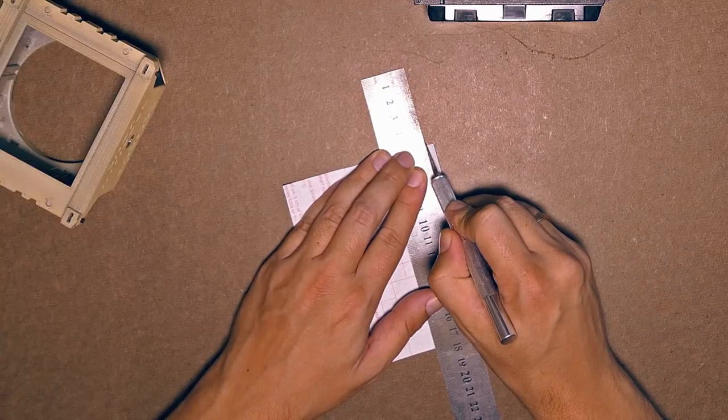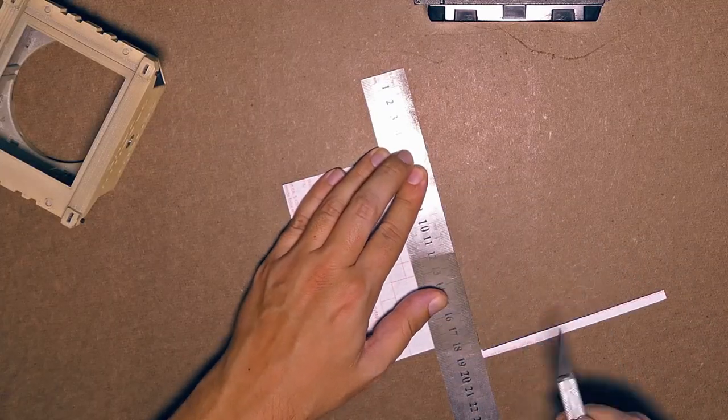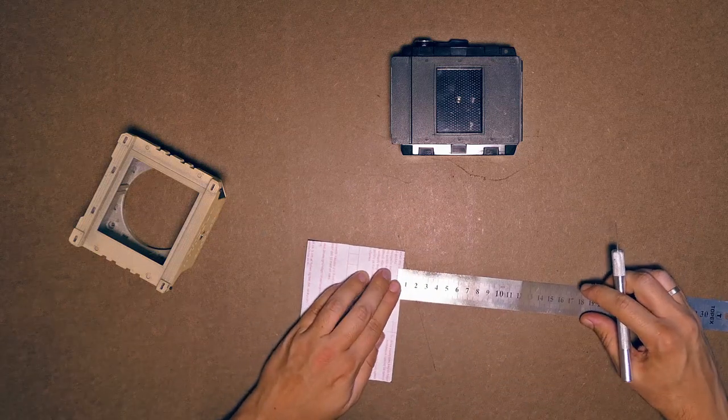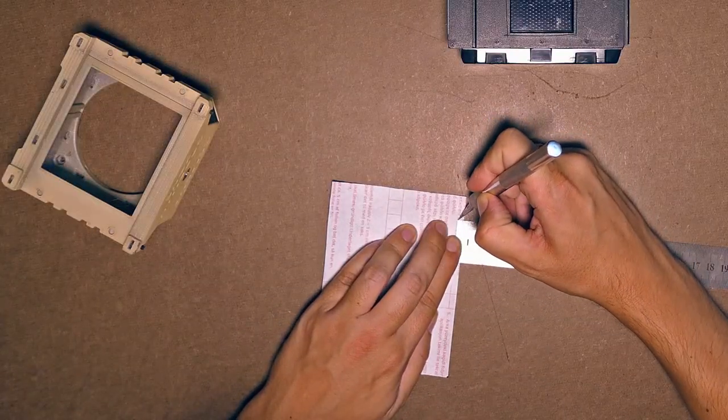Start by cutting the uneven edge. Then mark the 5mm distance on the back of the foil.